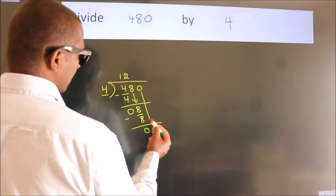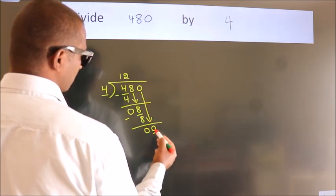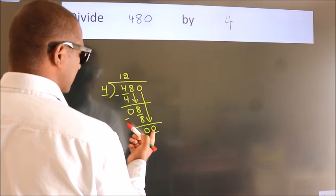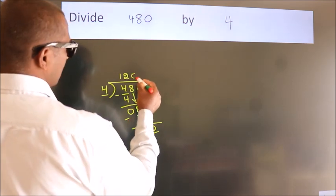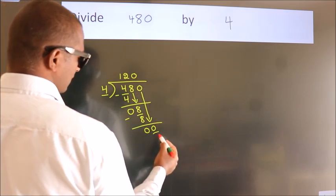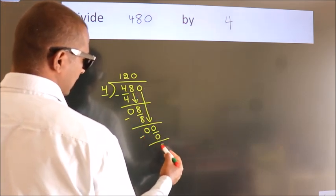bring down the beside number. So 0 down. So 0. When do we get 0? In 4 table. 4 times 0, 0. Now we subtract. We get 0.